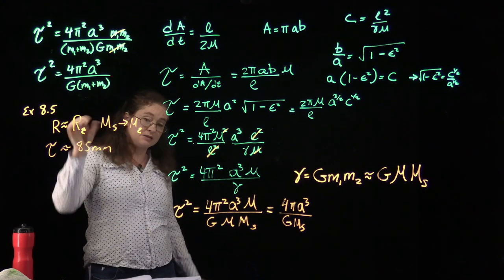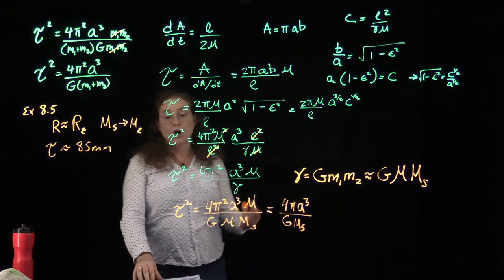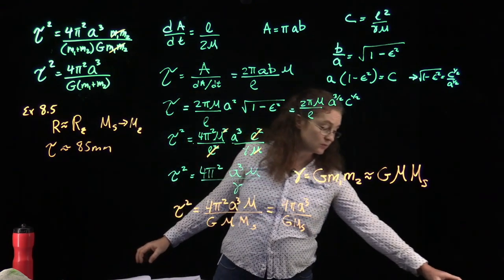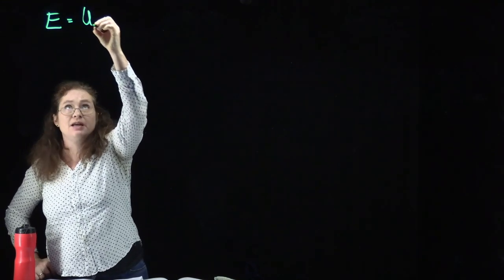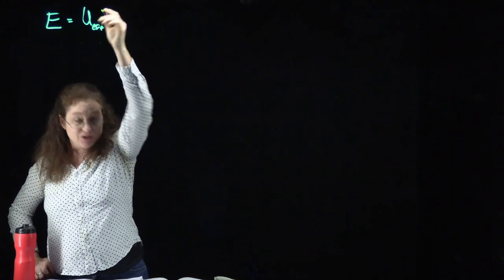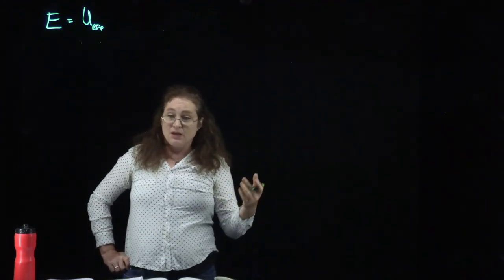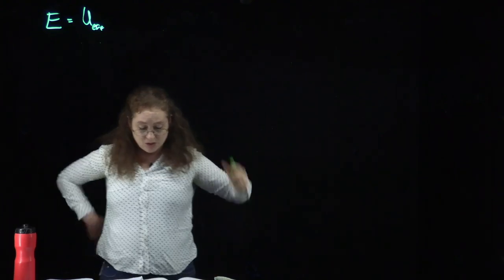This tells us that low Earth satellites, often used in communications, must have very fast orbital periods around the Earth. Now we want to talk about the relationship between eccentricity and energy, taking advantage of the fact that the total energy equals the effective potential energy at the minimum position, where kinetic energy is zero.